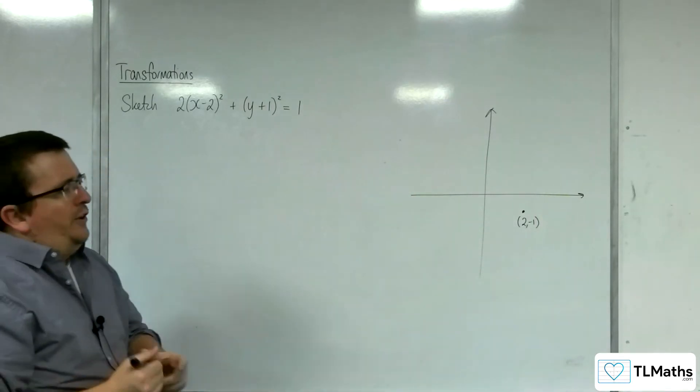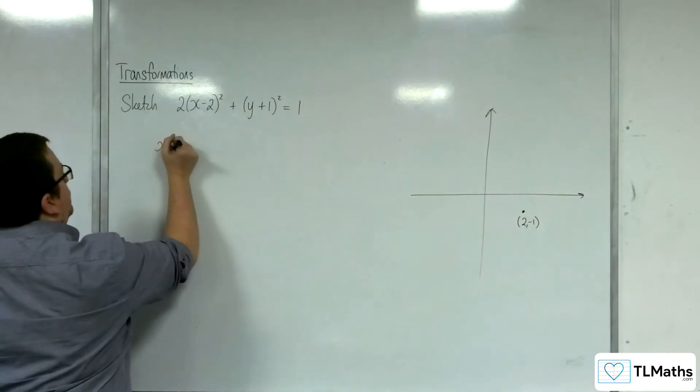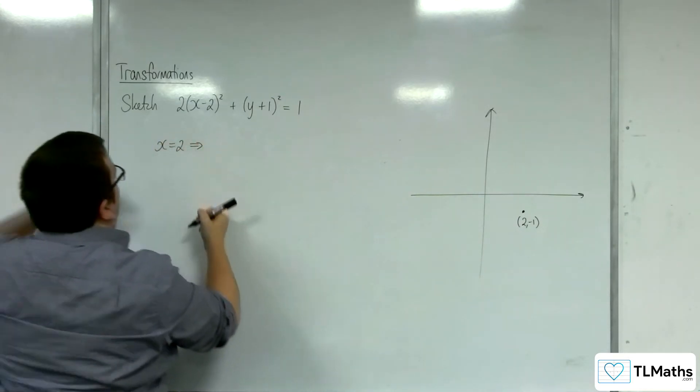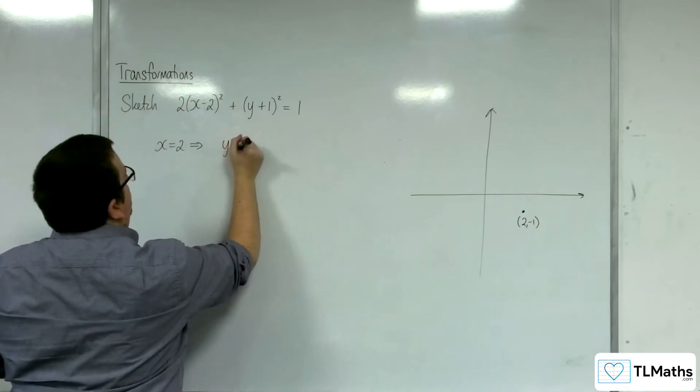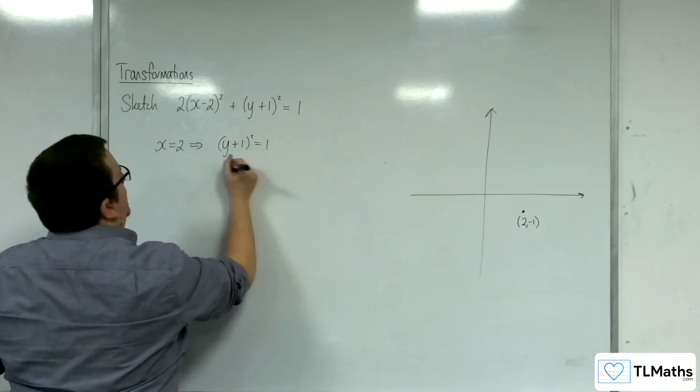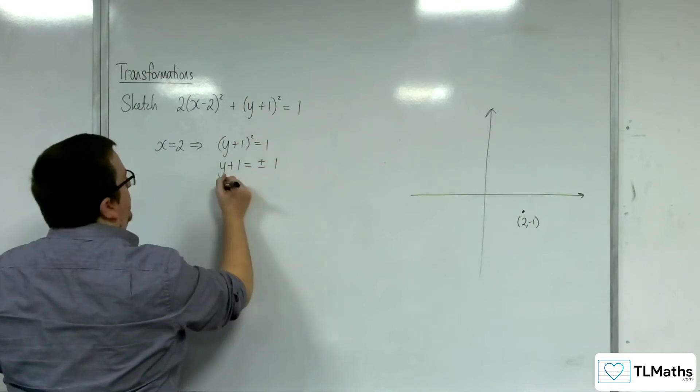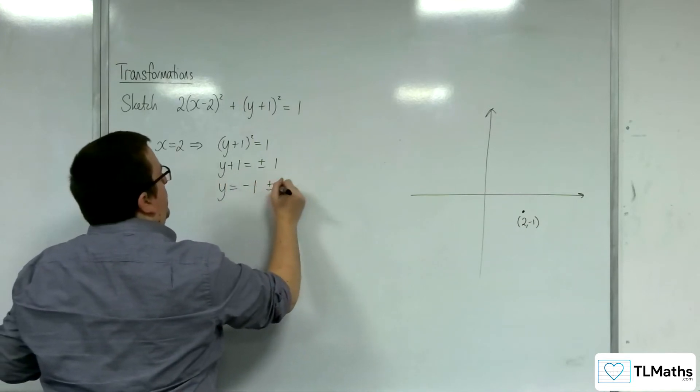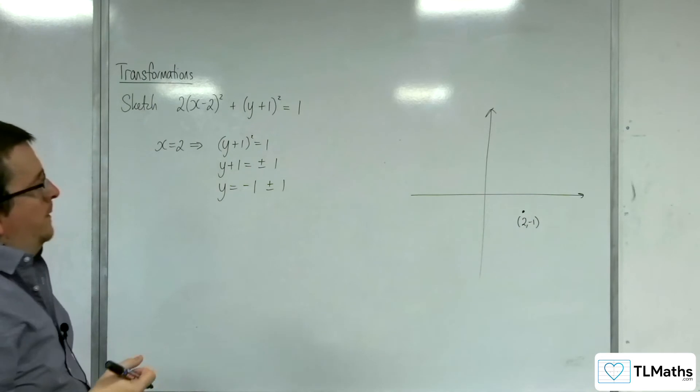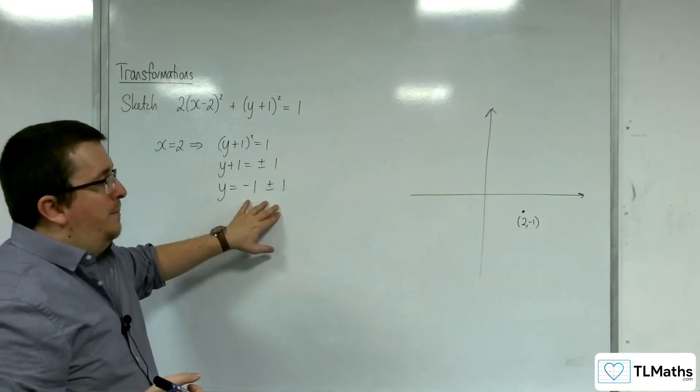If I substitute in x = 2, this bracket's going to go, and I get left with (y+1)² = 1. So y+1 is going to equal ±1, square rooting both sides. So y is going to equal -1 ± 1, which gives us 0 and -2.